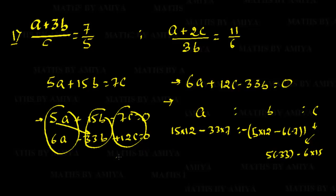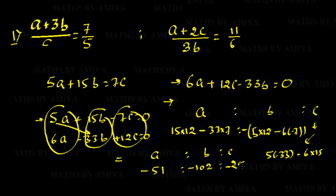Now let's solve. For A: 15 × 12 = 180, minus 33 × 7 = 231, giving −51. For B: 5 × 12 = 60, minus 6 × (−7) = +42, giving 60 + 42 = 102, with negative sign: −102. For C: 5 × (−33) = −165, minus 6 × 15 = −90, giving −165 − 90 = −255. Simplifying — the negative signs cancel, and 51 is common to all — we get A : B : C = 1 : 2 : 5. This is our required ratio in simplest form.